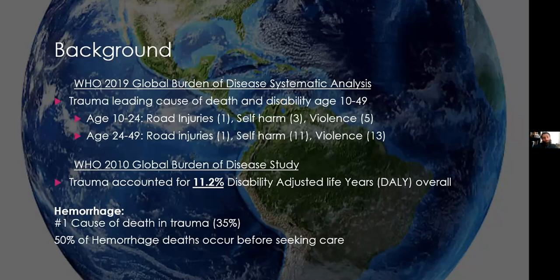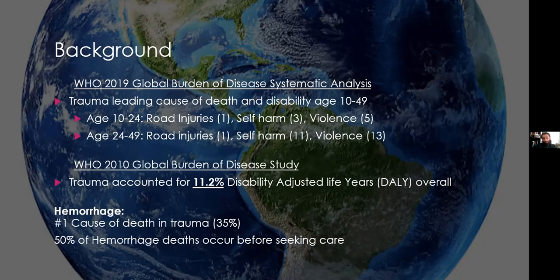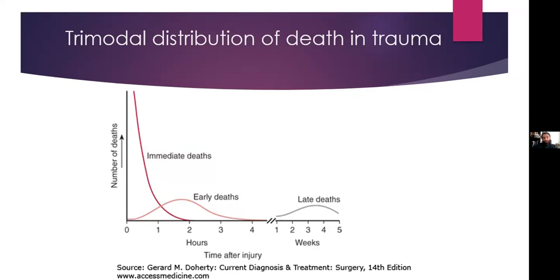Having an approach to hemorrhage and understanding why we do what we do is very important. 50% of hemorrhage deaths occur before seeking care. This relates to the trimodal distribution of death in trauma that we all learned in ATLS. With good pre-hospital care and protocolized emergency department care, we may be able to intervene on the immediate death curve. The early death period is our bread and butter, and we'll talk about how we can help these patients.